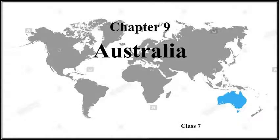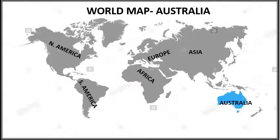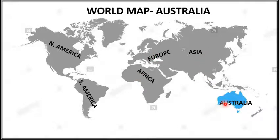Good morning children, hope you all are well and studying. Today we will study Chapter 9: Australia. This is a world map showing the seven continents of the world — North America, South America, Africa, Europe, Asia, and Australia — and about this continent we are going to study here.